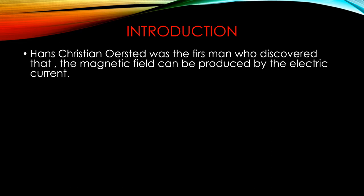What is the relation between magnetic field and electric current? When electric current is passed through a conducting material or wire, a magnetic field is developed. Hans Christian Ørsted was the scientist who first discovered that the magnetic field can be produced by electric current.